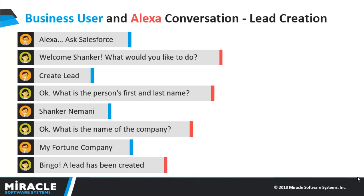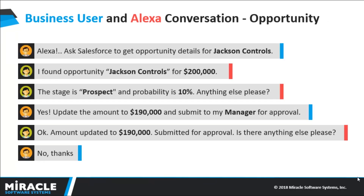Assuming a typical business scenario where a salesperson wants to create a lead from a call she just got off, this flow shows how to invoke Alexa and ask to create a new lead. First, the user invokes the Alexa skill by saying 'Alexa, ask Salesforce.' That triggers the Echo device, which is always in listening mode. For lead creation, it will ask for first and last name and the company name. Once the lead is created, the user is updated without needing to log on to Salesforce or open a browser.